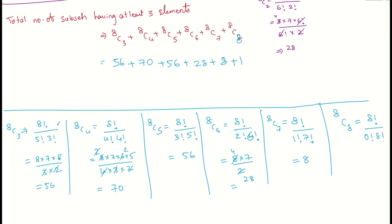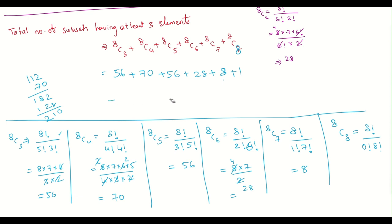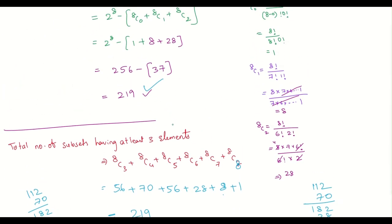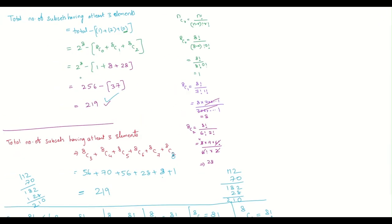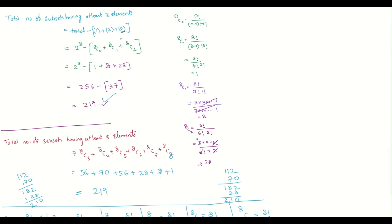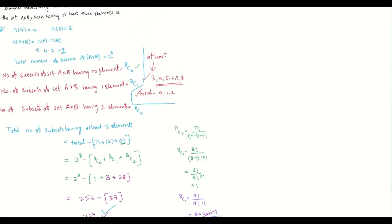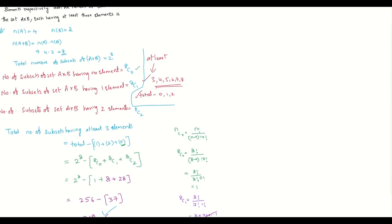Adding all terms: 56 + 70 + 56 + 28 + 8 + 1 = 219. This confirms our earlier answer. So either method — subtracting small cases from the total, or directly summing from 8C3 to 8C8 — gives the same result of 219 subsets.